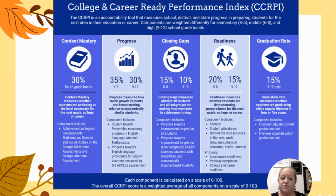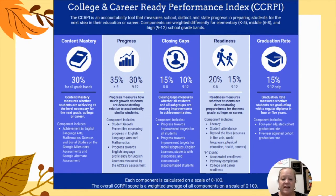Closing the gaps counts for 15% of our CCRPI score, and it measures whether all students and all subgroups are making improvements in achievement rates. And then 20% of our score for grades K through 8 comes from readiness — whether students are demonstrating preparedness for the next grade, college, or career. That looks at our students' literacy levels, attendance, and beyond-the-core areas, which include fine arts, world languages, PE, health, and careers.